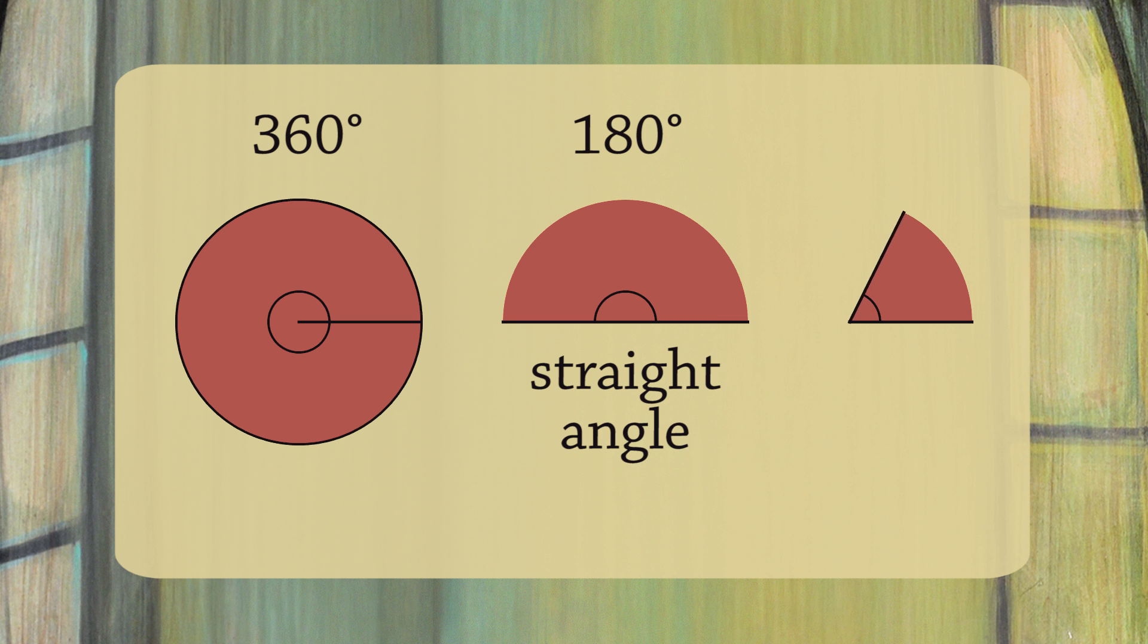If you rotate a line segment a quarter of a turn, you get a 90 degree angle. This angle is called a right angle because the angle stands upright. In this special case, we no longer mark the angle with an arc, but instead we draw a tiny square. This is because squares have four right angles.